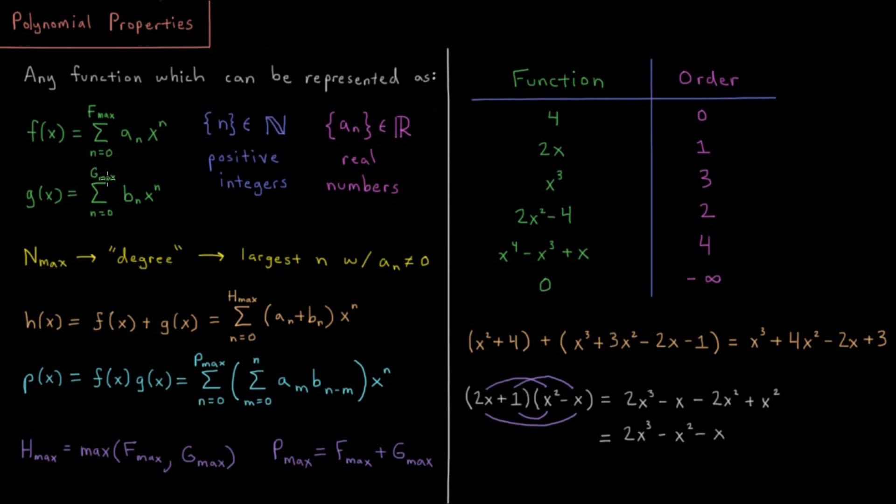In principle, any time I do this sum, I can keep having this sum go up to infinity because I could just say that every value of a sub n for n higher than this maximum number would just be equal to 0. So for x cubed, x cubed equals x cubed plus 0 times x to the 4th plus 0 times x to the 5th. But it's not necessary to keep just doing 0's forever. So the degree is just the largest n where my coefficient is not equal to 0, the magnitude of my coefficient is greater than 0.